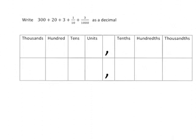So we look at what we have and we note we've got no thousands, we've got three hundreds, we've got two tens, we've got three units, then comes our decimal comma, we've got one tenth, we've got no hundredths and we have got three thousandths.